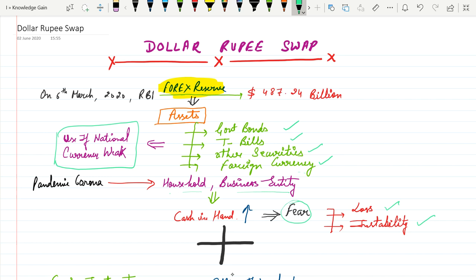As we are all well familiar with the pandemic situation going on, many households and business entities want more cash in their hands due to fear. Due to this pandemic situation, the fear comes in two forms: businesses and households selling off all their investments due to future loss and instability.